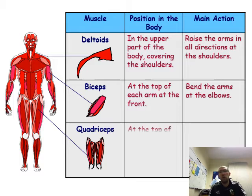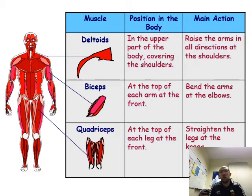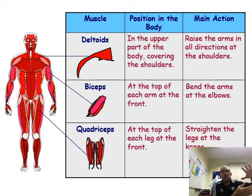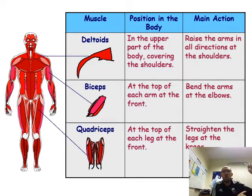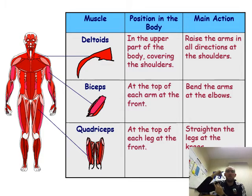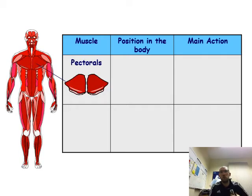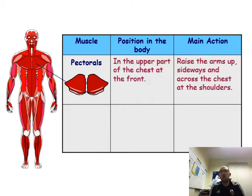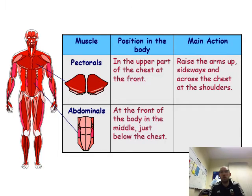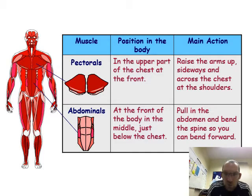The quadriceps are at the top of the leg and they straighten the leg at the knee. When kicking a ball, the hamstring draws the leg back at the knee and the quadriceps straighten it — these muscles work in pairs. Same with the arm: the tricep lengthens the arm, the bicep bends it back. The pectoral muscles in the chest can raise the arms up and move them side to side across the chest.